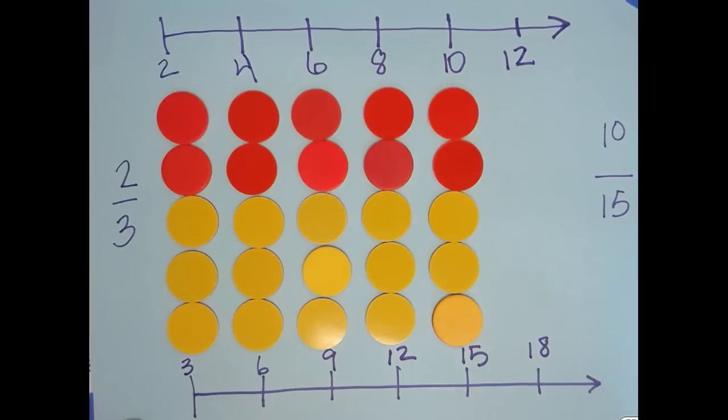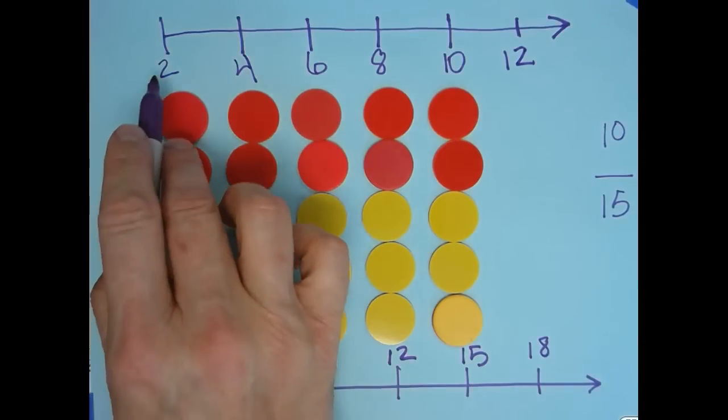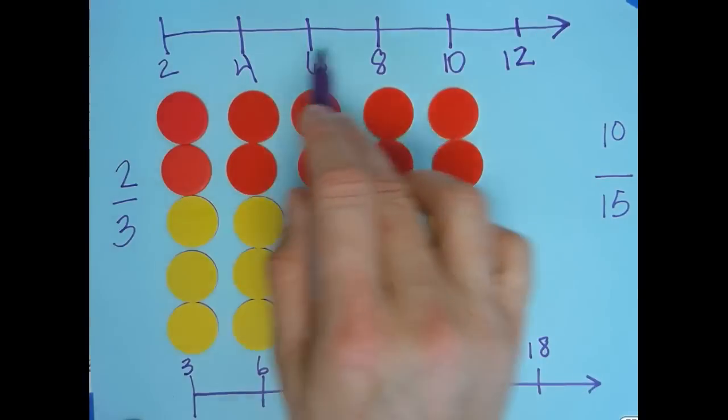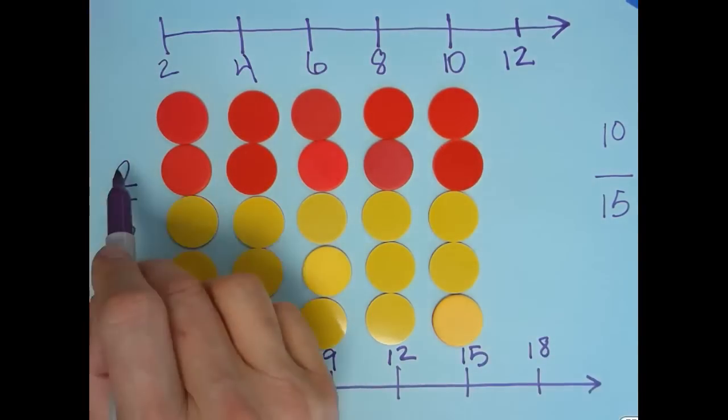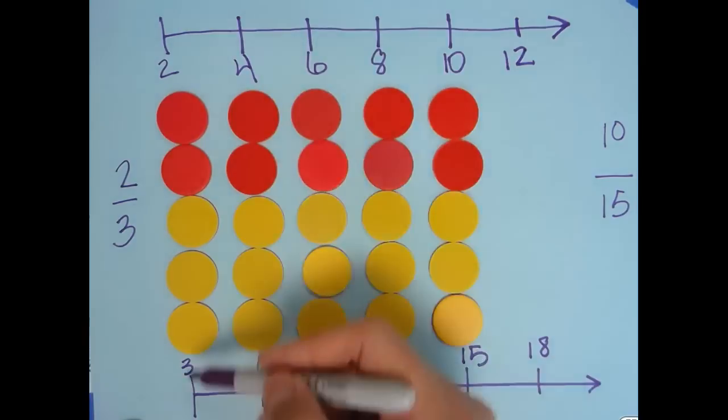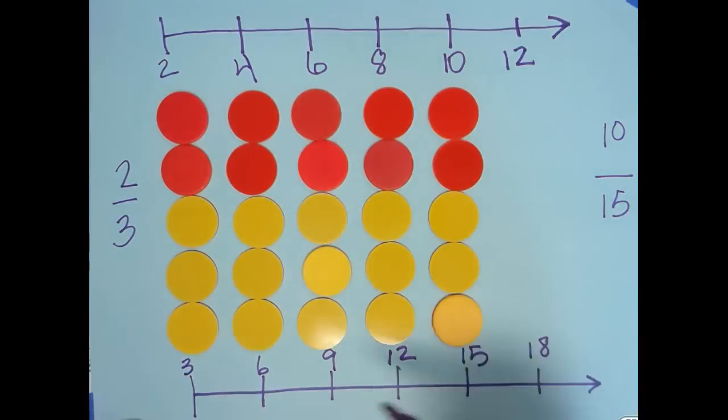That's a double number line because we have a number line up top counting by twos, and a number line on the bottom counting by threes. With our ratio two to three, we can always determine how many total we would have in each group by looking at the double number line.